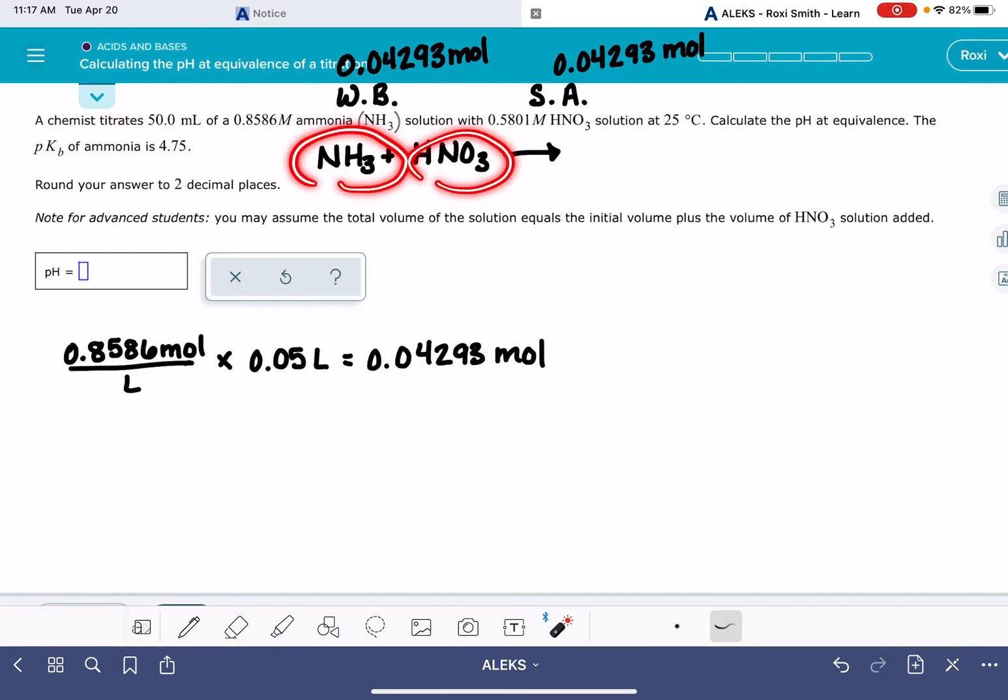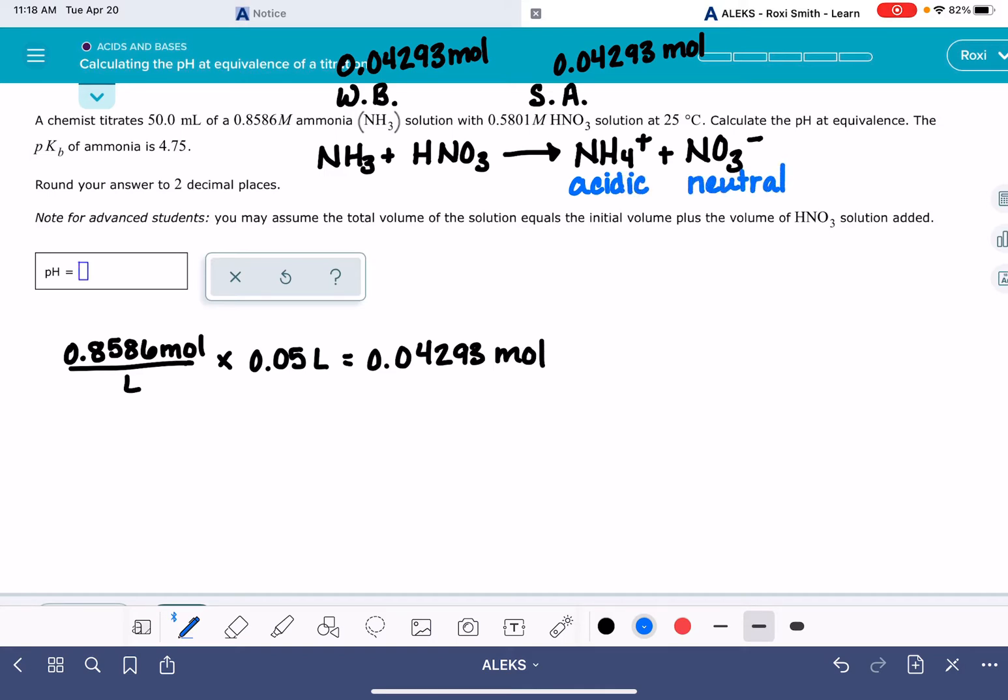The next thing we have to do is write a reaction between the two molecules, keeping in mind which is your base. NH3 is my base, so that means it is an H-plus acceptor, so I'm going to give it a hydrogen. And HNO3 is my acid, so I'm going to take one of its hydrogens away. We're predicting the products of this reaction.